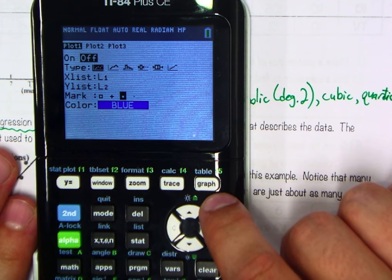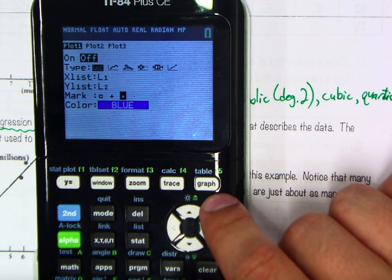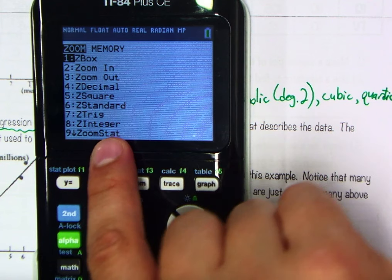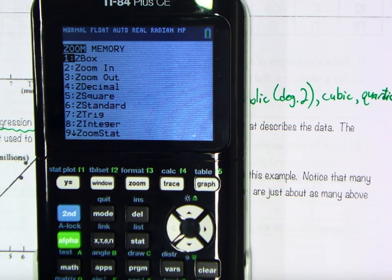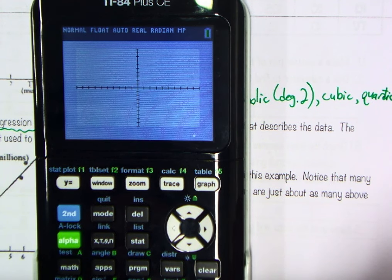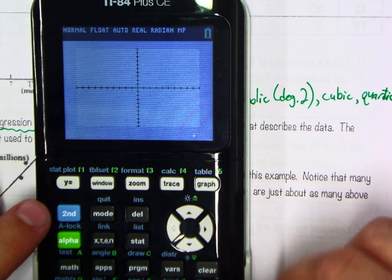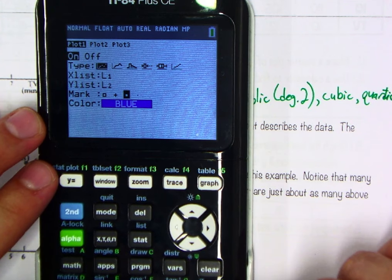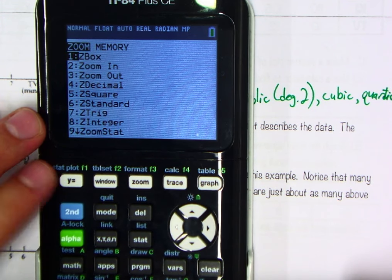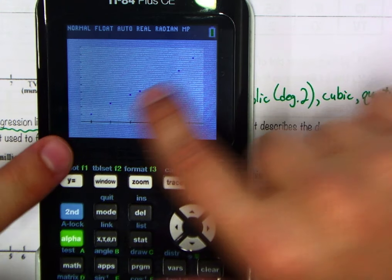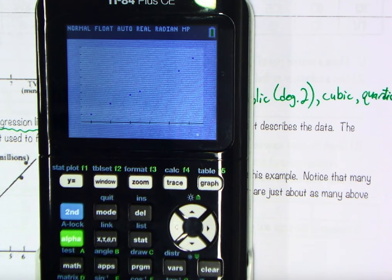Now if I just hit graph, chances are good that most of us are in zoom standard. So let's hit zoom, and instead of standard, I want everybody to look down here at nine, or again, other calculators may have something else there, but for me, nine will allow me to zoom in specifically on my data. I just realized I didn't turn my stat plot on, so why don't we actually do that? Second stat plot, enter, on. There we go.